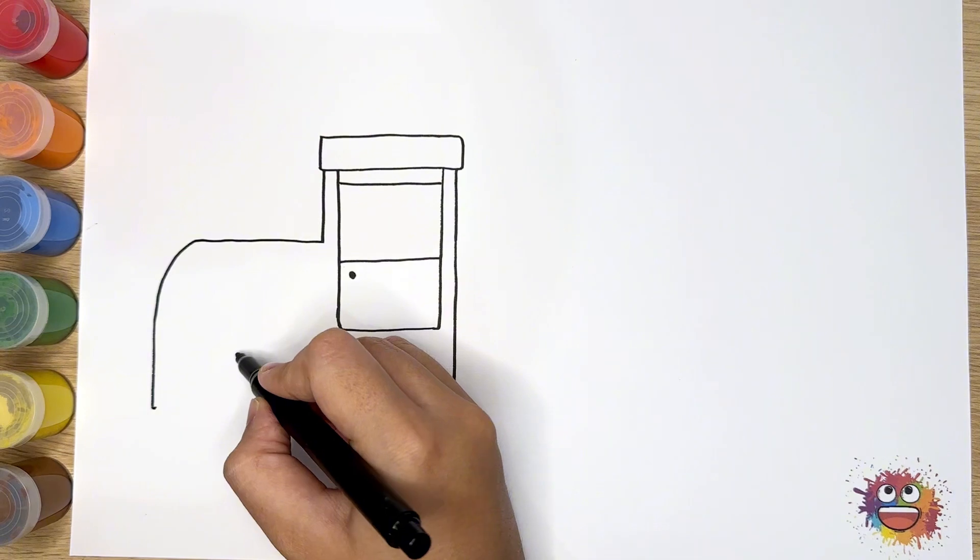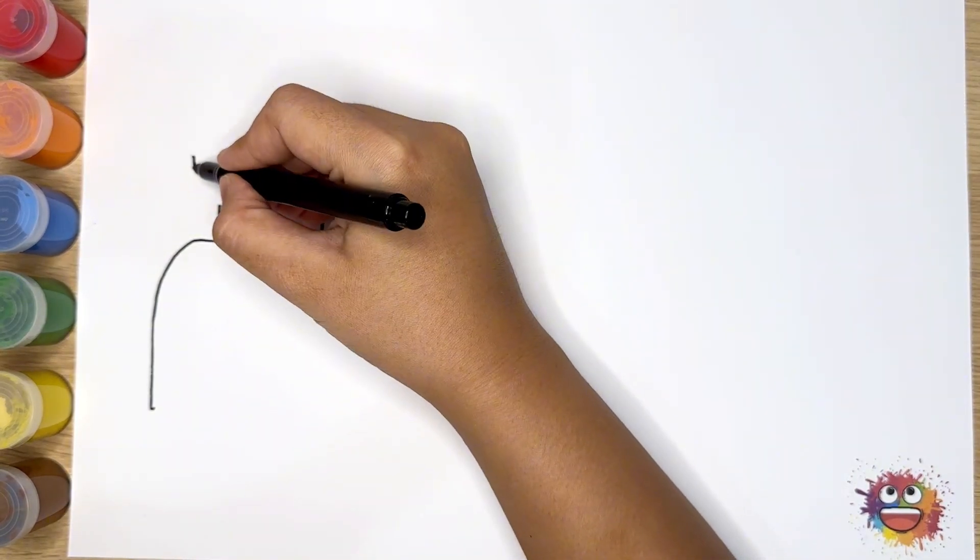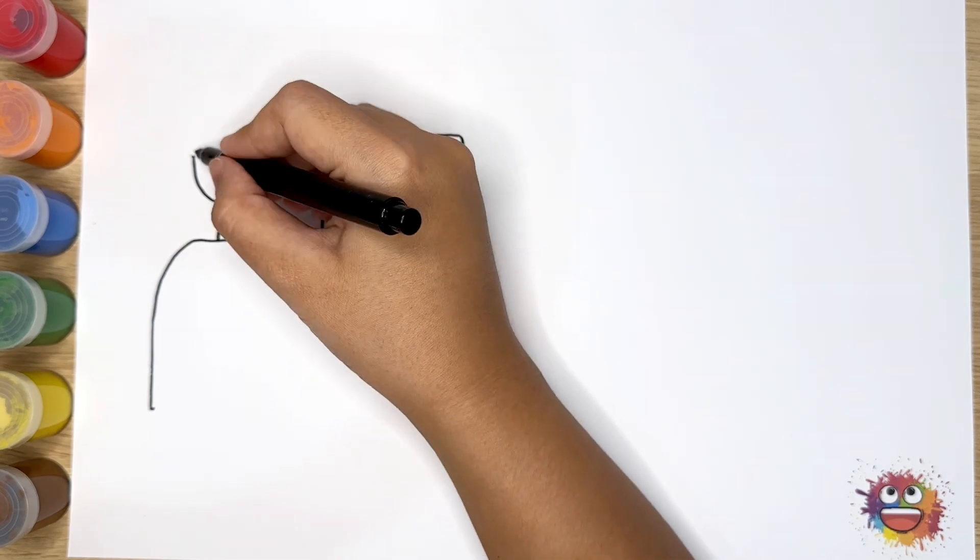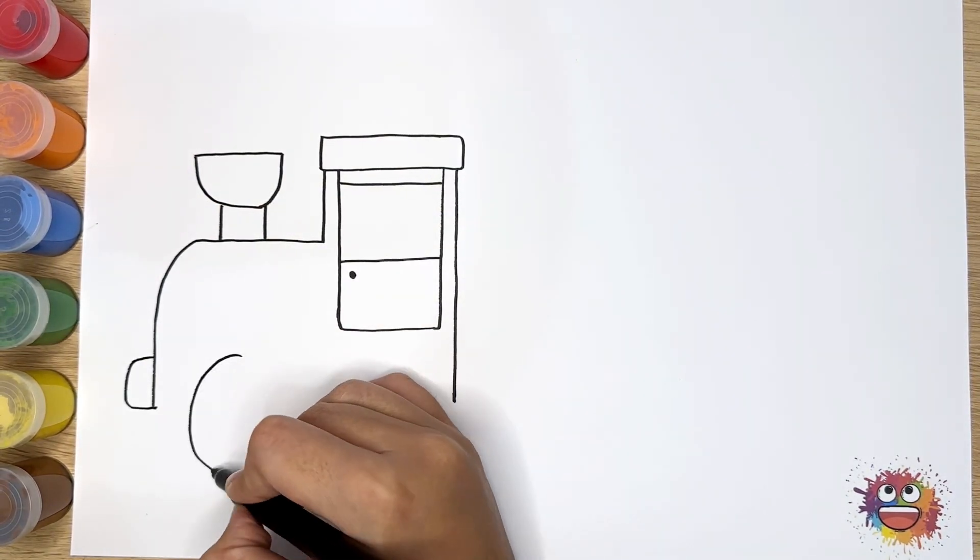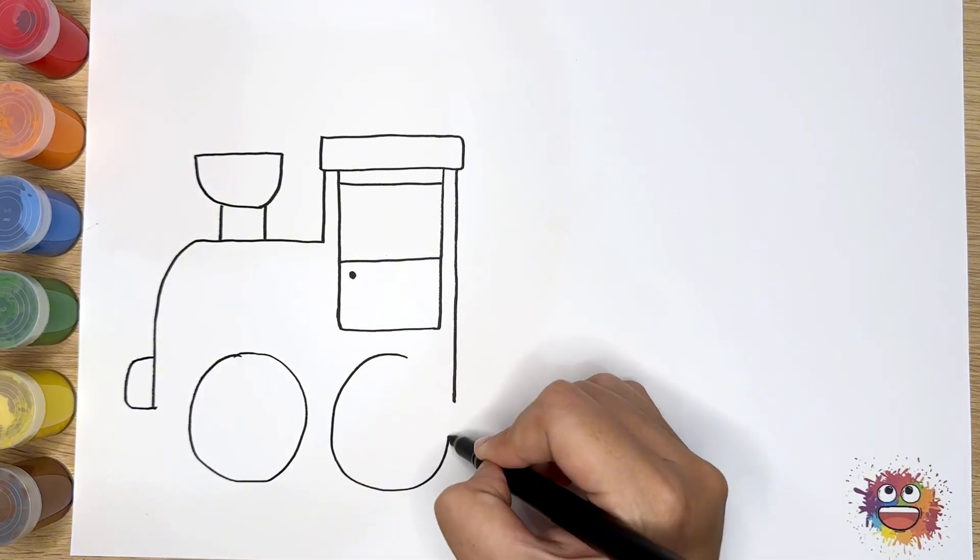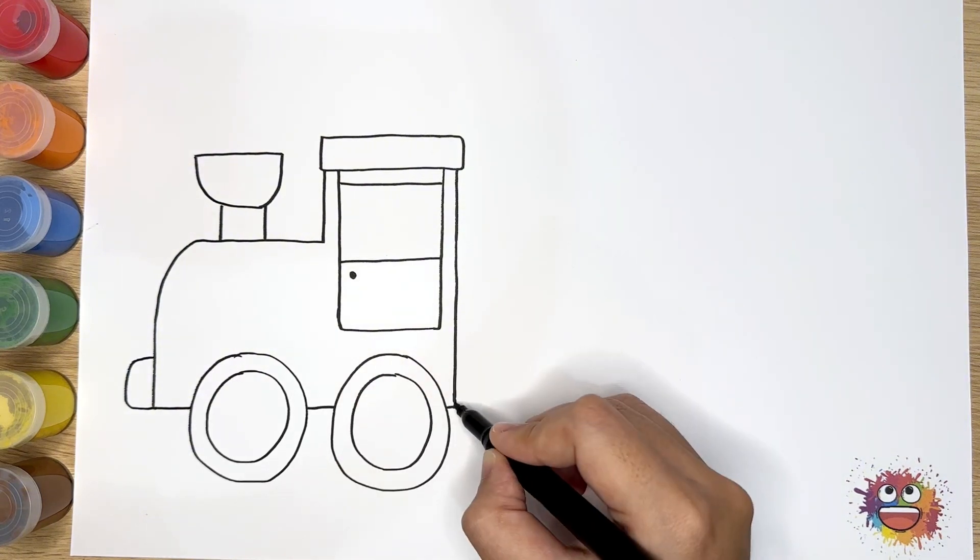And now, I draw the body. Draw wheels beneath the body of the train. Typically, there are sets of wheels positioned along the lengths of the train.